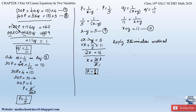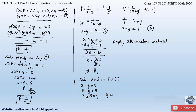Substituting x equals 8 into equation 9: 8 minus y equals 5. Sending y to the right and 5 to the left gives 8 minus 5 equals y, so y equals 3. Therefore x equals 8 and y equals 3.